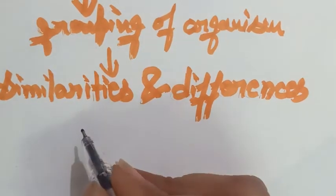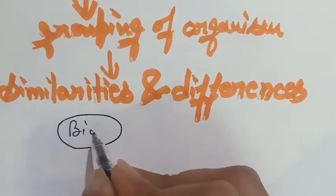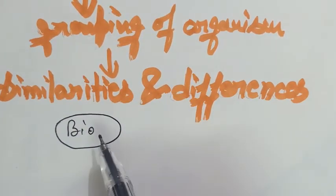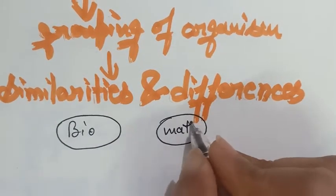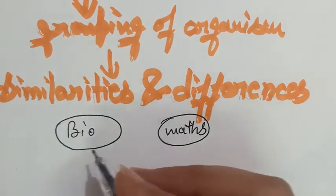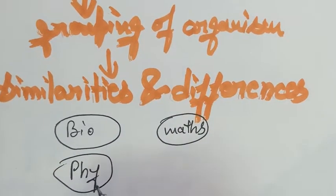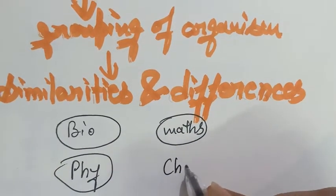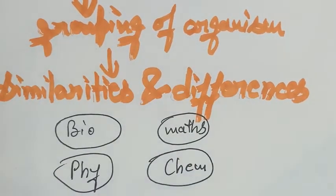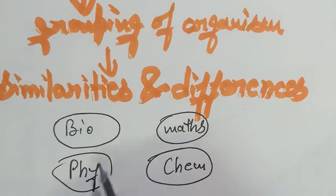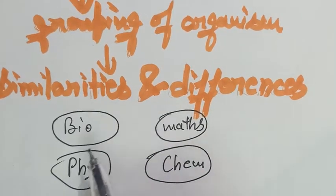So student, for example, we are having biology book to study about living organisms, we are having maths book in which numbers are there, we are having physics where we study about all the machinery and everything, and in chemistry we learn about the chemicals. So we are having these four different books and they are grouped on the basis of their differences.